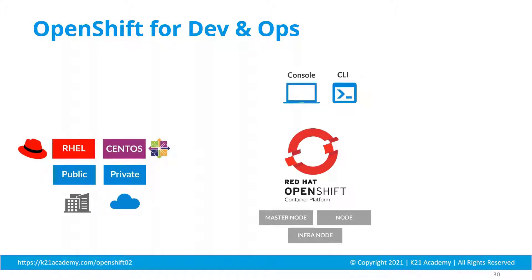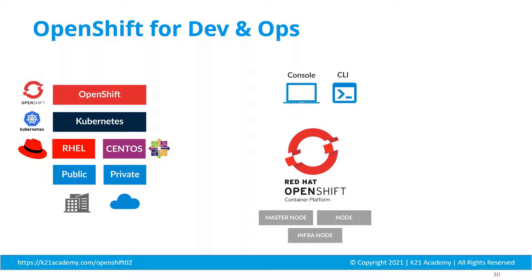On top of bare metal machines, if it is the OKD platform, you can definitely go for the same choice. It is not supported by Ubuntu and other Debian flavors. You can use RHEL, and on top of that you can deploy Kubernetes, and on top of that there is OpenShift software — services are deployed.